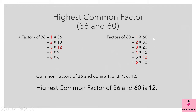Out of these common factors, we find the highest common factor. The biggest number is 12, so 12 is the highest common factor of 36 and 60. Remember, the factors of a number are finite — these are the only factors of 60, and these are the only factors of 36. There is no other factor of 36 except these numbers.